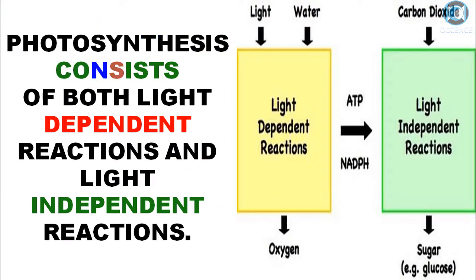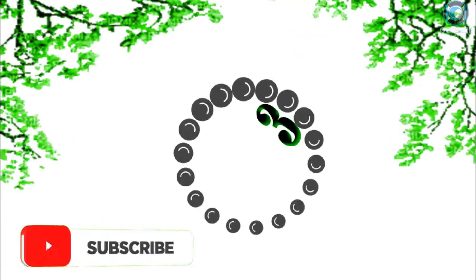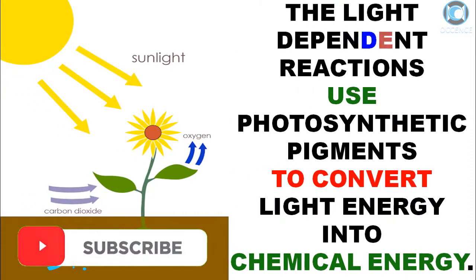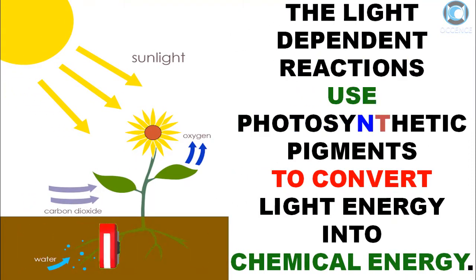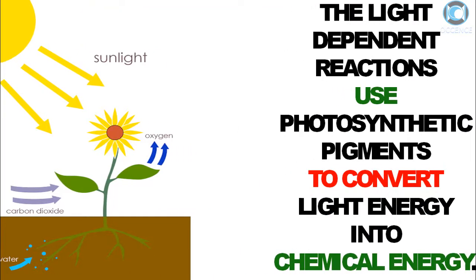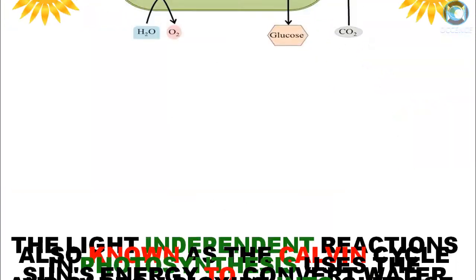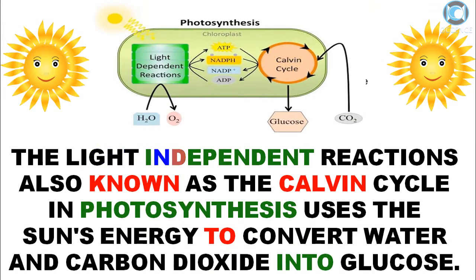Photosynthesis consists of both light-dependent reactions and light-independent reactions. The light-dependent reactions use photosynthetic pigments to convert light energy into chemical energy. The light-independent reactions are also known as the Calvin cycle.